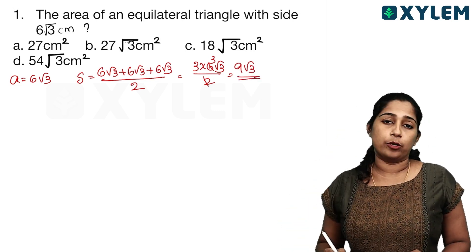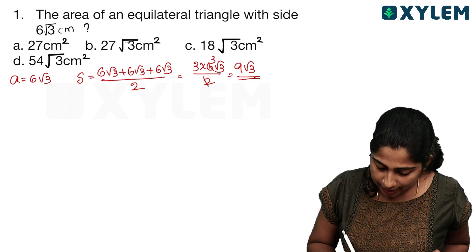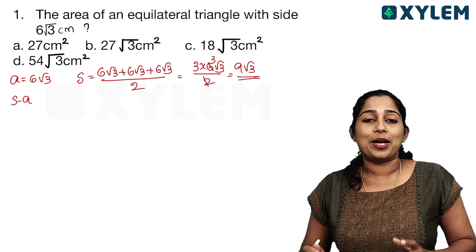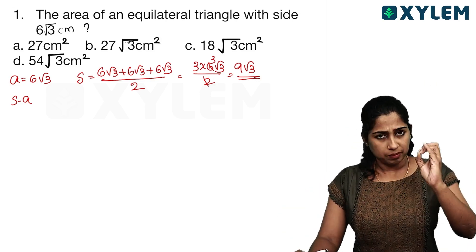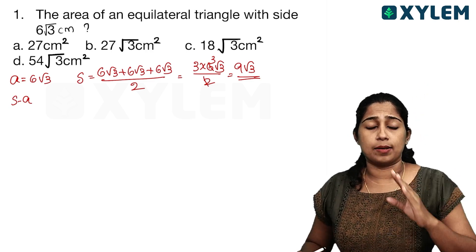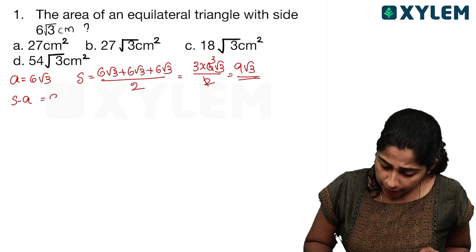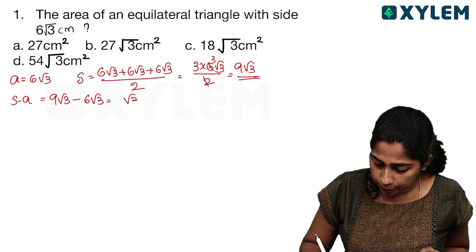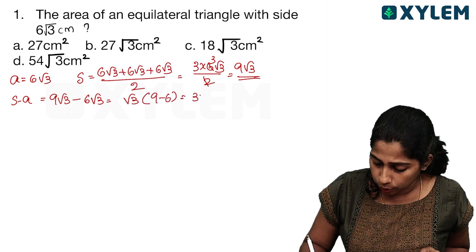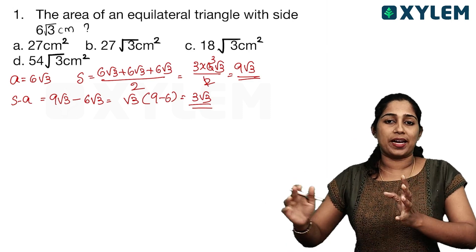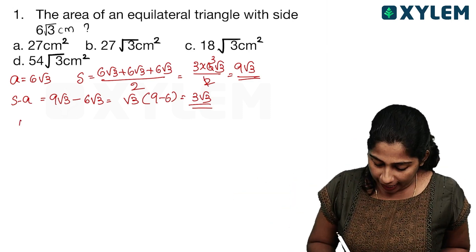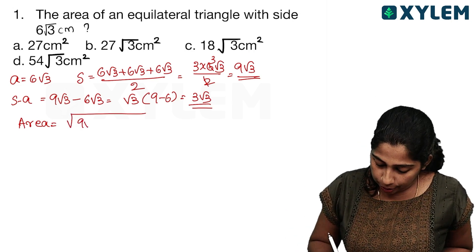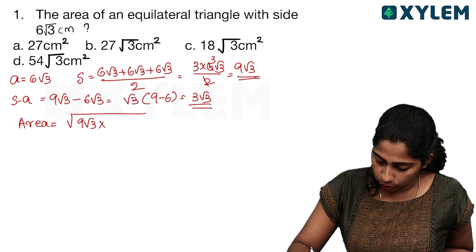Now we have S. Since it is an equilateral triangle, S minus A, S minus B, and S minus C are all equal. S minus A equals 9√3 minus 6√3. If √3 is common, 9 minus 6 equals 3, so S minus A equals 3√3. The area equals the square root of S into (S minus A) into (S minus B) into (S minus C), which is the root of 9√3 into 3√3 into 3√3 into 3√3.